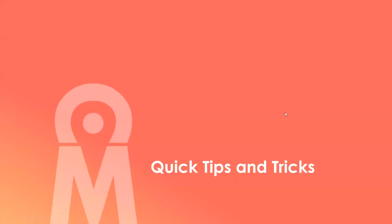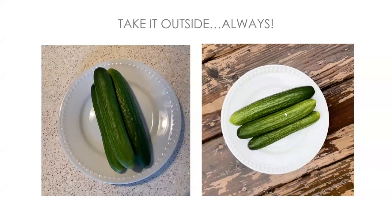Some quick tips and tricks: for anyone in the food business — and this applies to any product — outside lighting is far superior to anything indoors unless you have a full studio setup. Take your product outside for product shots. Baby cucumbers photographed inside look terrible under overhead or side lighting — they look gross. Just take them outside and they look more vibrant and appealing. If you take one thing away, it's take it outside.